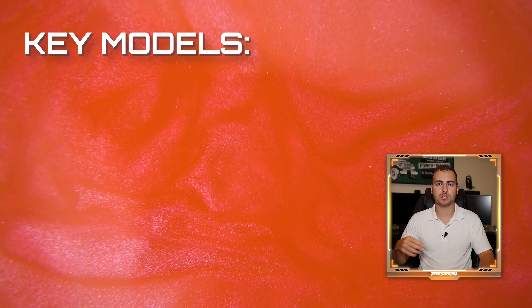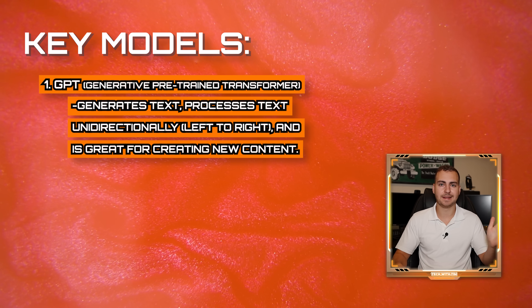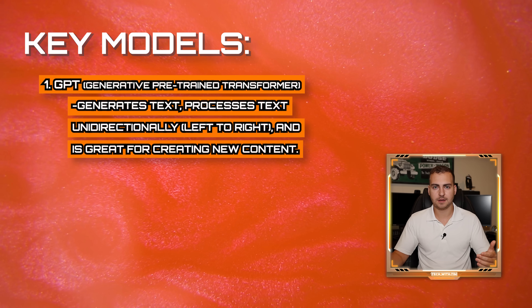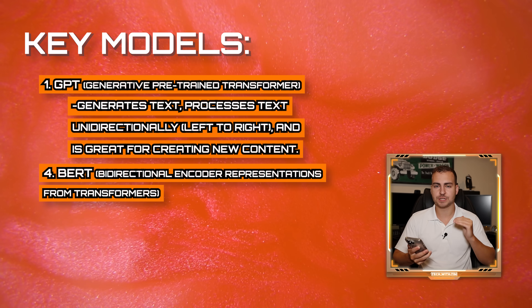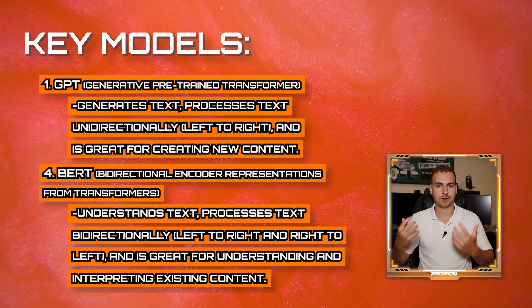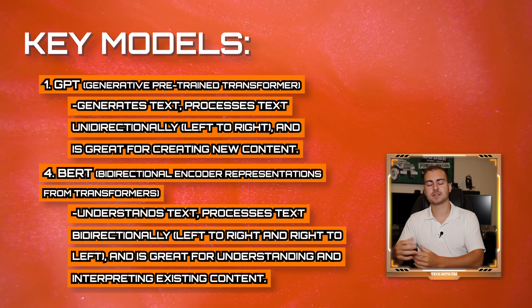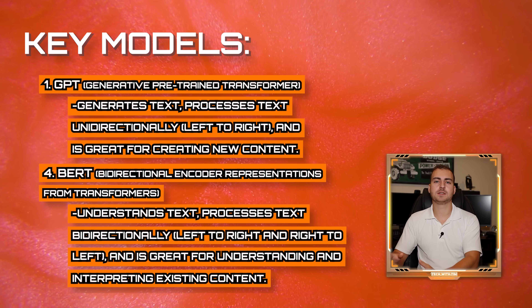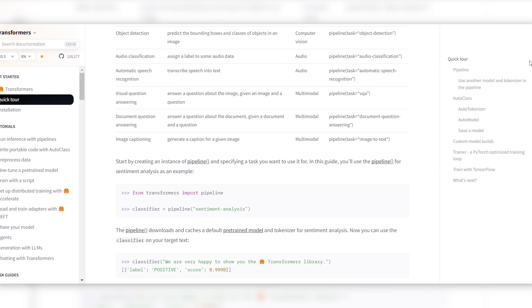When talking about LLMs, there are two main types to be aware of. The first is GPT — Generative Pre-trained Transformer — which processes text unidirectionally from left to right and is generally very good at generating new content. The next is BERT — Bidirectional Encoder Representations from Transformers — which processes text both left to right and right to left, making it really good at comprehension and answering questions. Generally, use GPT to generate new content, and use BERT for deeper understanding and comprehension. If you want to work with LLMs in Python, I recommend looking at Hugging Face, which has pre-built transformers you can fine-tune and bring into your Python programs.